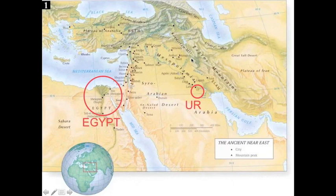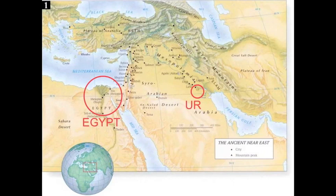Just to situate Egypt on the map: here it is, and here's Ur where we saw the great Ziggurat. Egypt is organized in a linear fashion along the Nile River — an unusual shape for a country. Unlike, say, Ohio, which extends across plains and prairies, this is a linear civilization that clusters along the fertile edge of the Nile. The farther you move away from the Nile, the more hostile the environment is, with extensive deserts where no farming can happen.